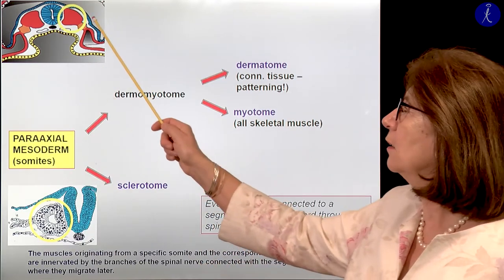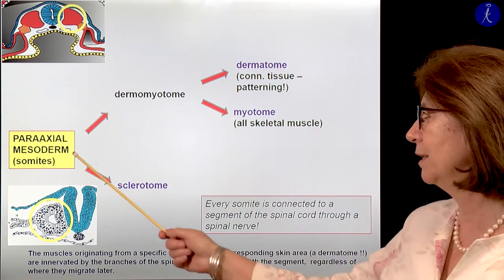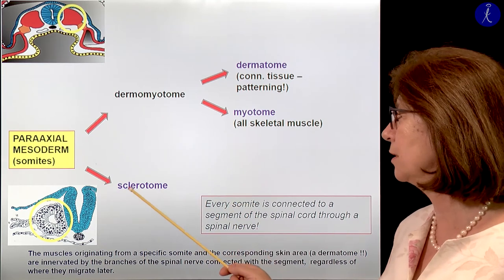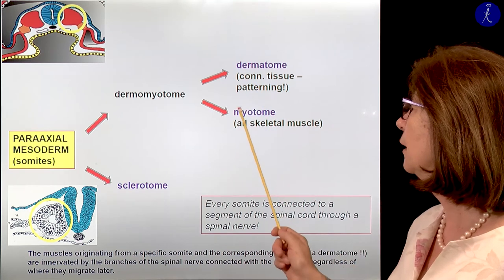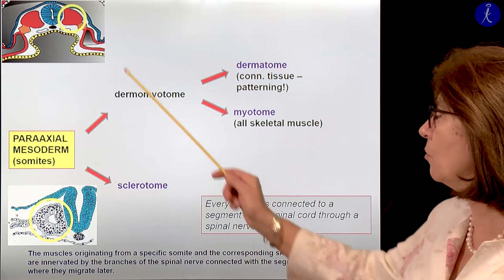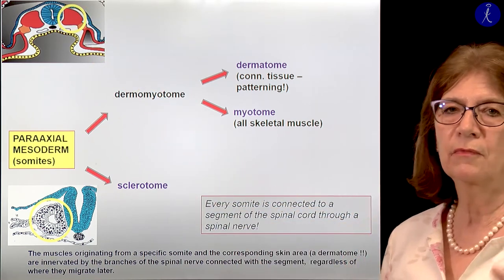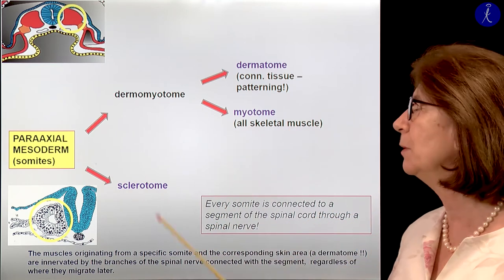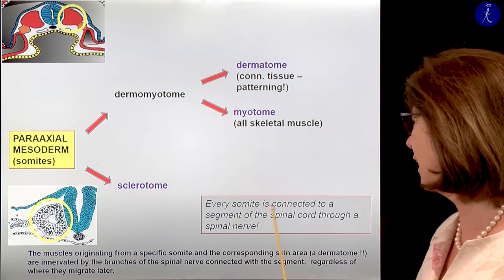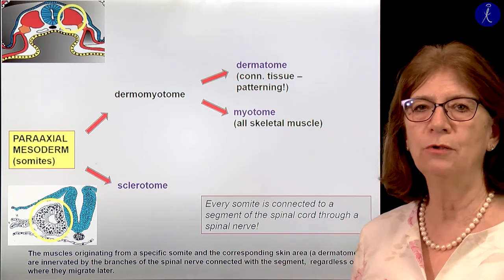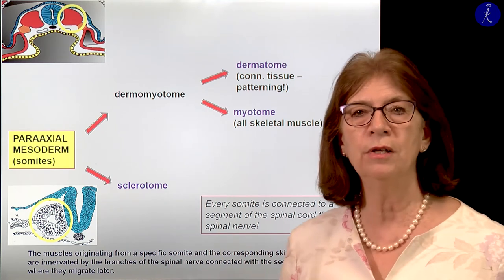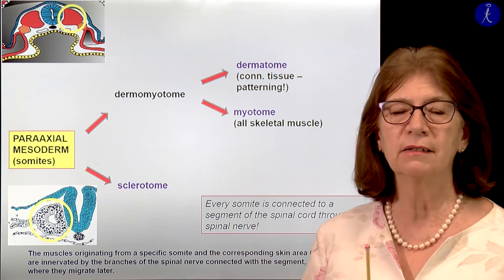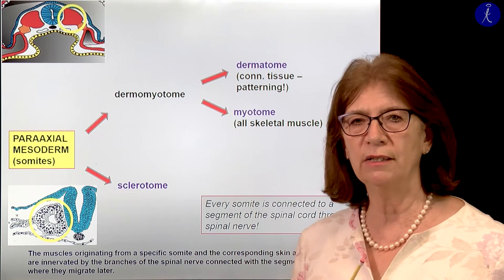If we deal only with the paraxial mesoderm, I will explain how it divides into the so-called dermomyotome and the sclerotome. The dermomyotome will later be divided into the dermatome and the myotome. Every somite at this developmental stage is connected with a spinal nerve which comes from a specific segment of the spinal cord. This is very important — without innervation the periphery doesn't develop, and if the periphery doesn't exist then the central nervous system doesn't develop; they have a reciprocal regulatory function.